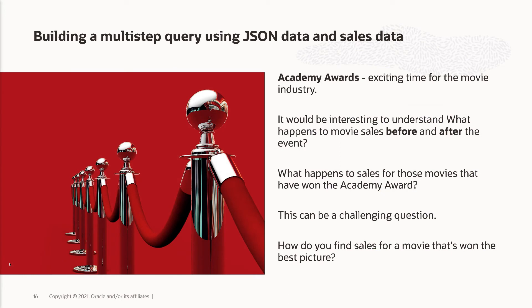Having got that concept, we can then move on to do some deeper analysis. We're going to focus on understanding what happens around the Academy Awards — it's a great time for the movie industry with lots of news and exciting things going on. But what does that do to our sales? Does a movie get more views after it's won an Academy Award compared to before? We'd like to write a query that shows us how many views it had before the award versus after, and what the pickup was.